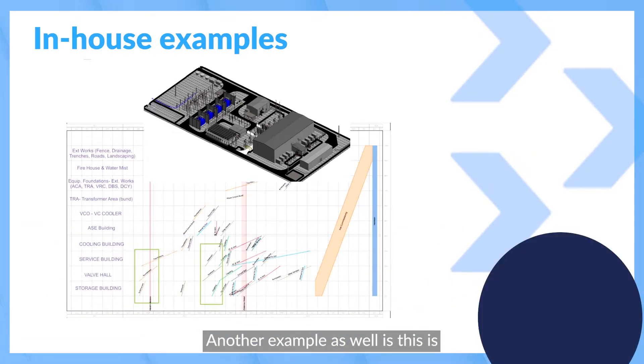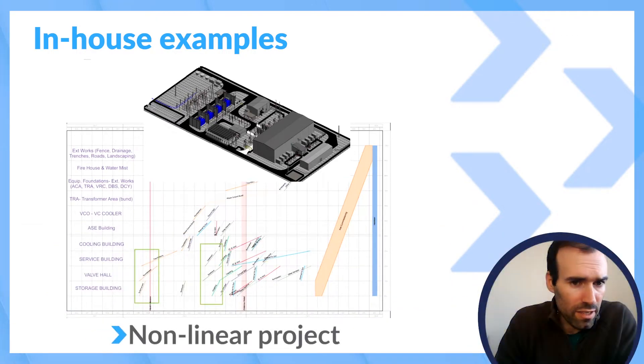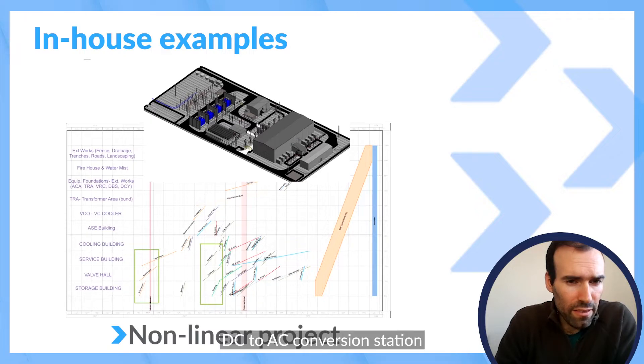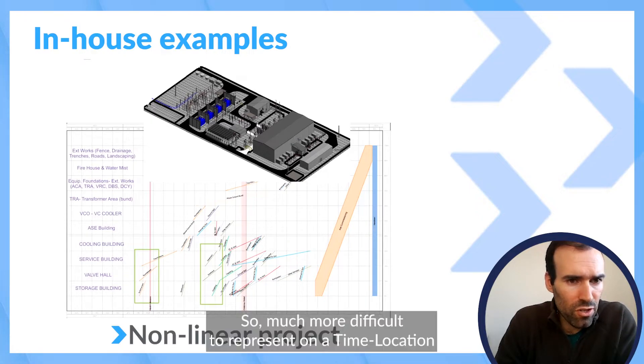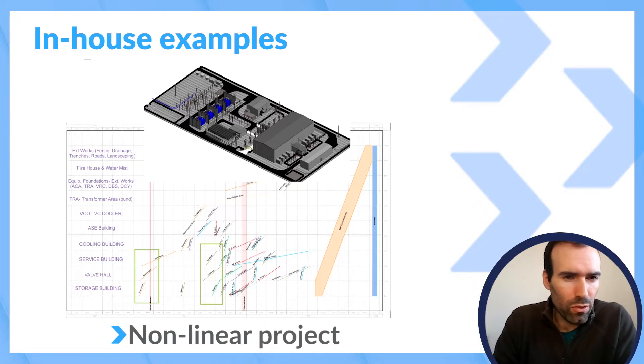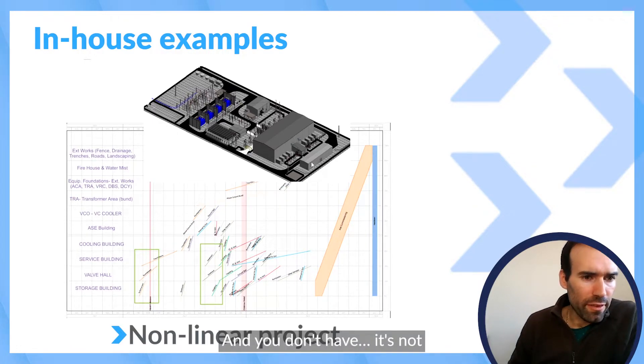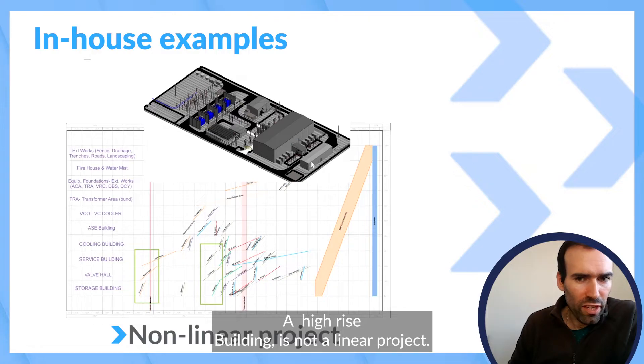Another example as well is this DC to AC conversion station, so much more difficult to represent on a time location because it's a very small area and it's not a high-rise building, it's not a linear project.